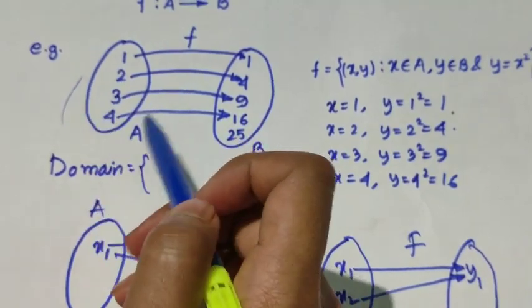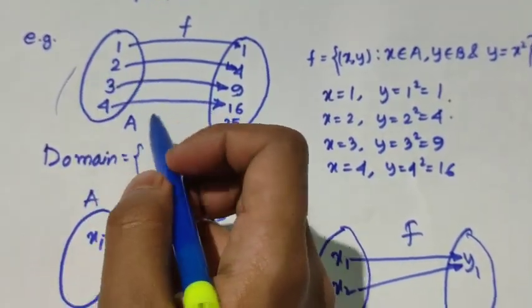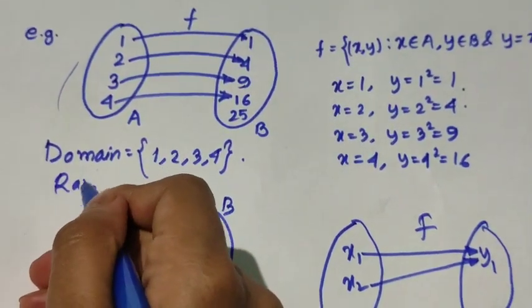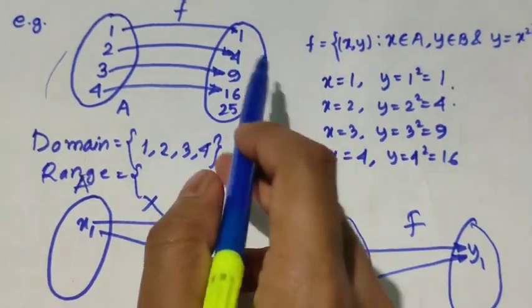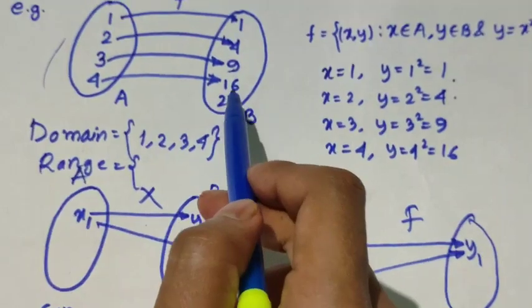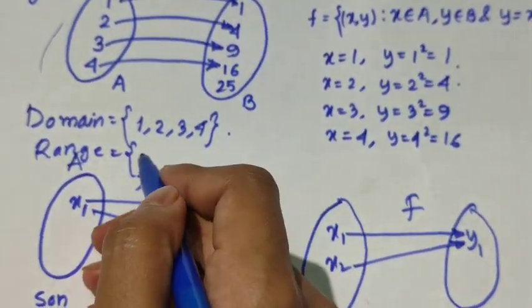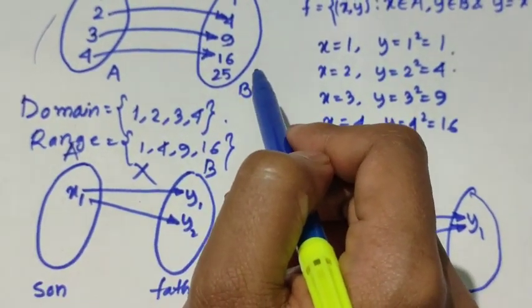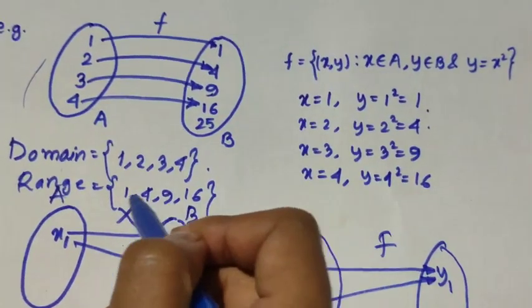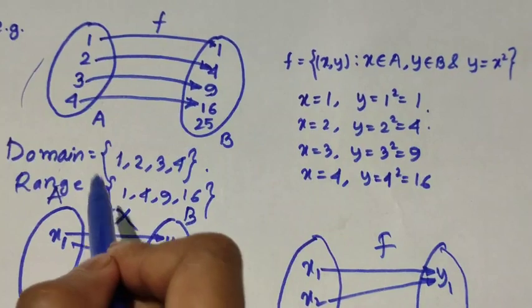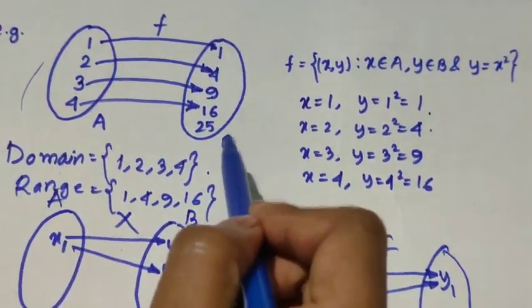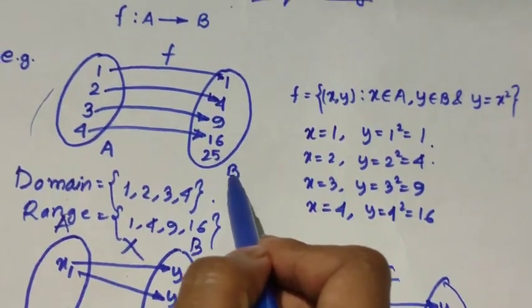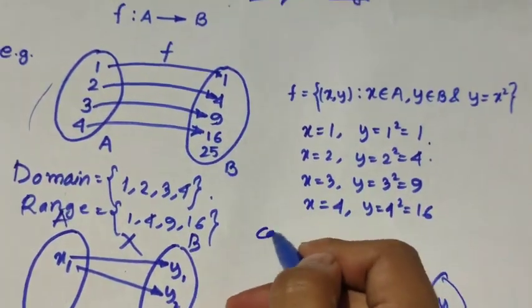Another important thing is the domain. The domain is the set of values of x — the used elements in set A. Here, all elements are used, so 1, 2, 3, and 4 form the domain. The range is the set of used elements in set B, the values of y, so 1, 4, 9, and 16 are the range. Remember, set B is called the codomain, which is independent of the range. The range may consist of all elements of the codomain, but the codomain is not always equal to the range. Here the codomain is set B, which includes 1, 4, 9, 16, and 25.